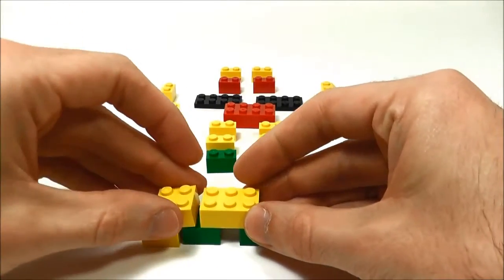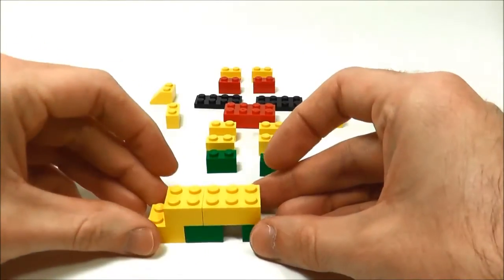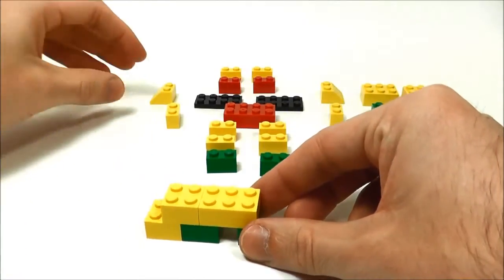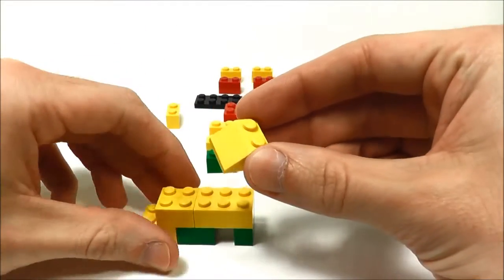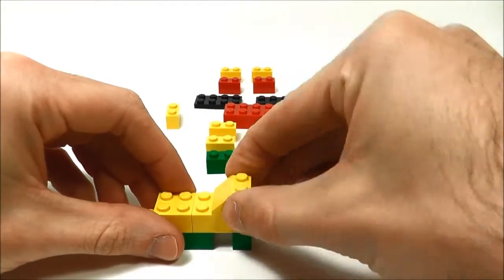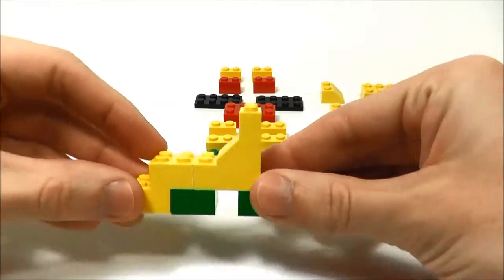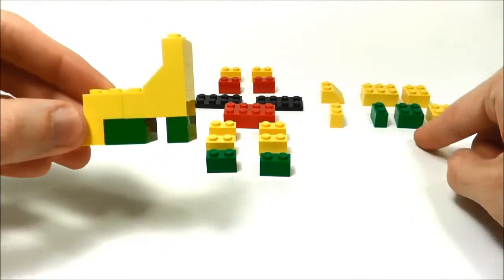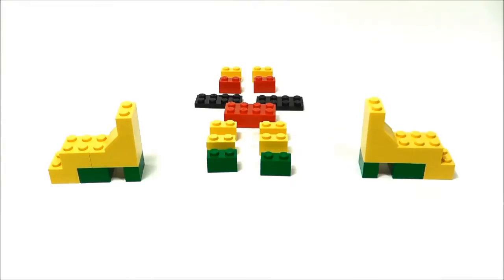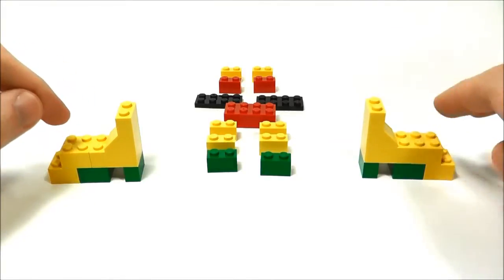And then this one will go right beside that. So we're working on the left side of the bridge right now. And then this piece which is one of the slopes. It's one of the only two slopes you're going to use. It'll go on top. And then this will finish off the left side of the bridge. So you're going to do the same thing for the right using these pieces right here. When that's done you'll have two identical pieces. The left part of the bridge and the right part.